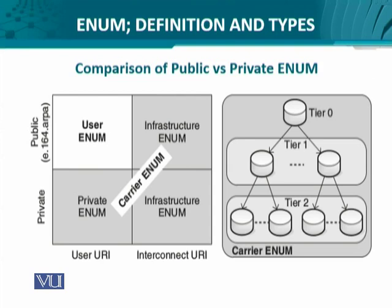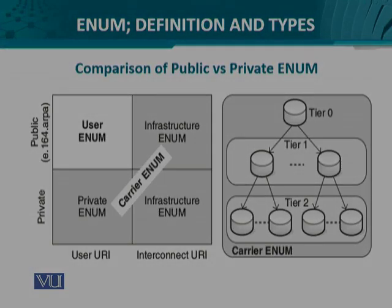On the right hand side, an approximate understanding of how the tiers are organized at the international, country, and within-country levels is shown. We have Tier 0, Tier 1, and Tier 2. This pertains to carrier NIM only.